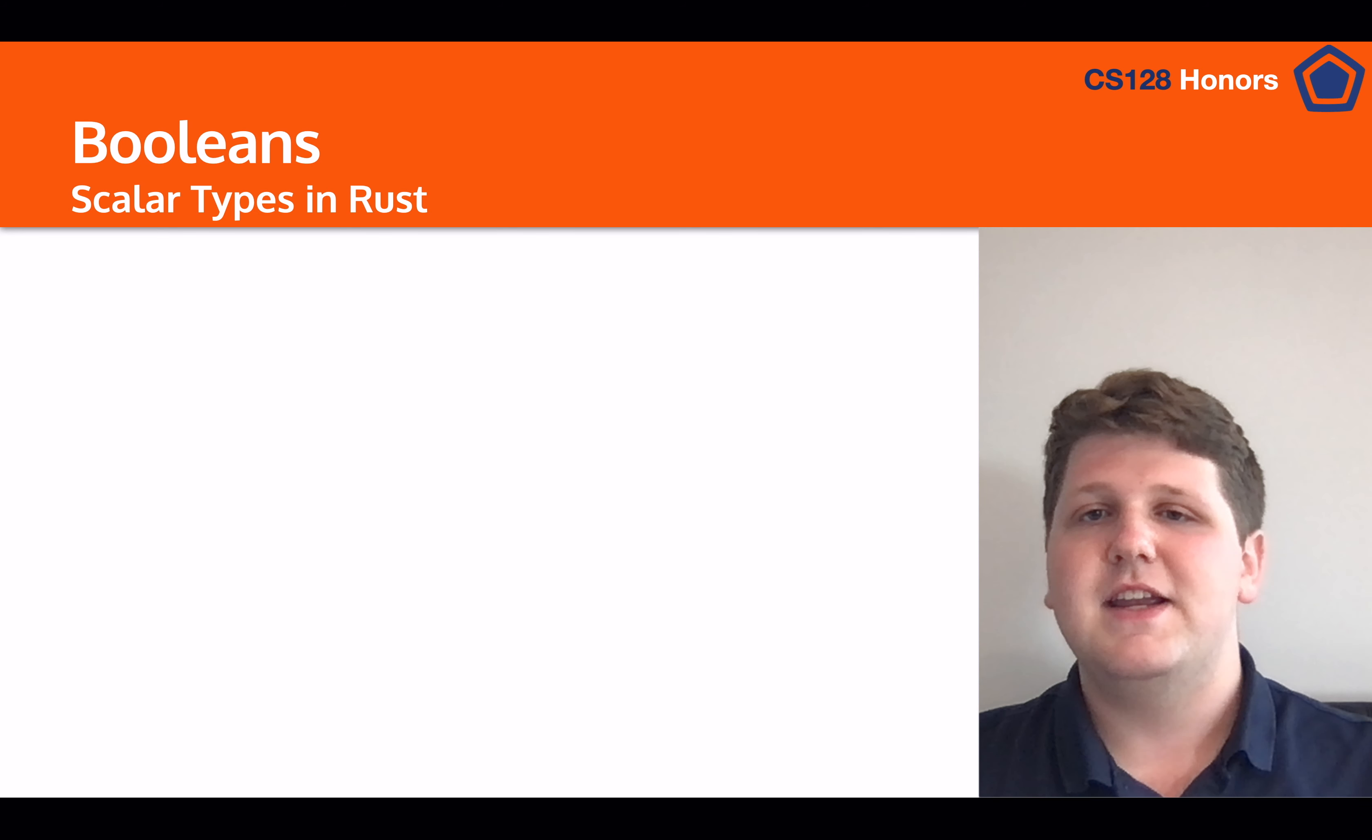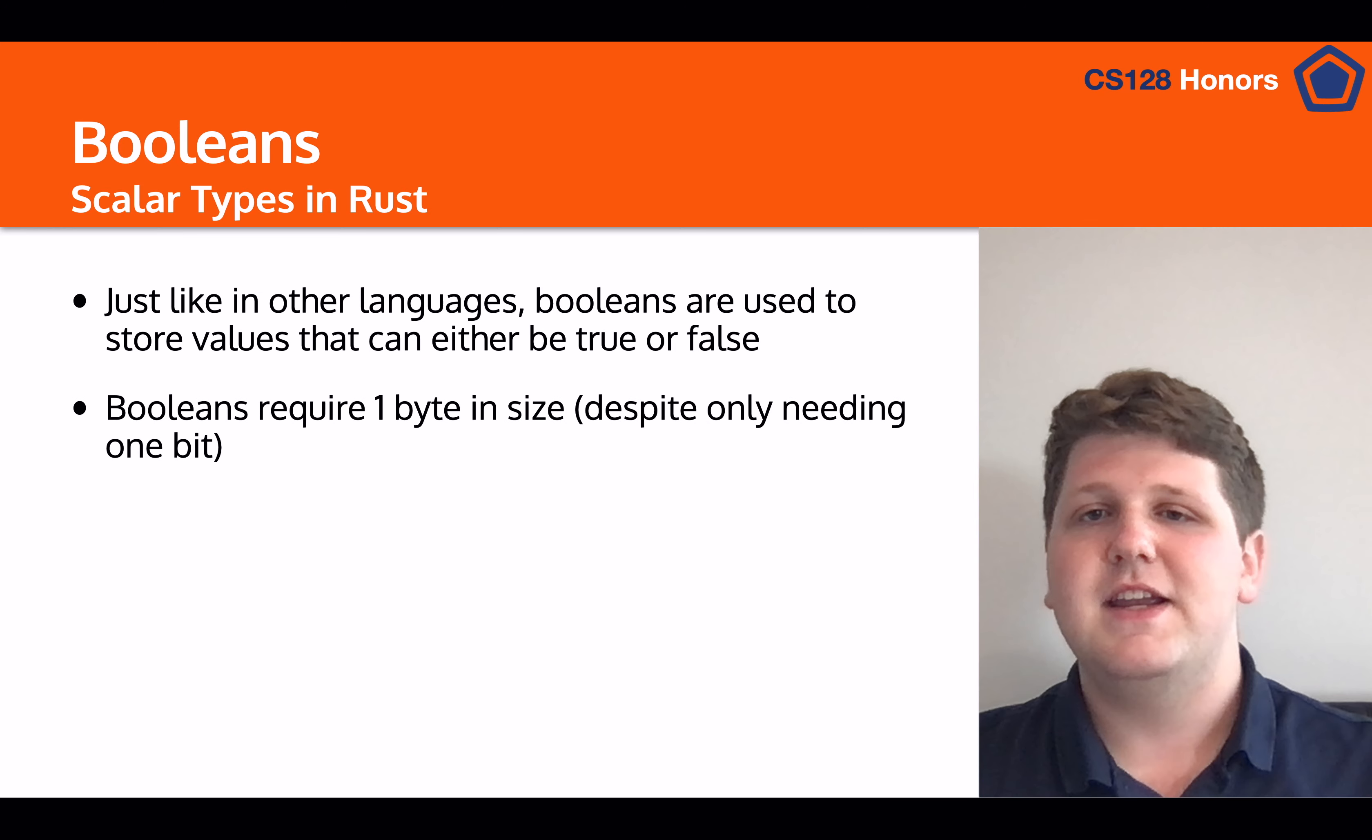So the next type that we're going to talk about in Rust is Booleans. And similarly to other languages, Booleans store a value of either true or false. It can only be one of those two, and nothing more, nothing less. Now, interestingly, and this is something that you'll see in most low-level languages, you'll start to notice that actually Booleans take up one full byte, or eight bits in size, despite the fact that they only need one bit to determine whether it's true or false.